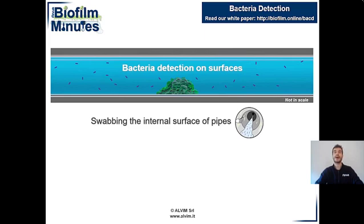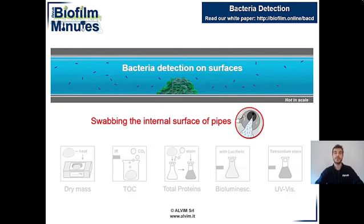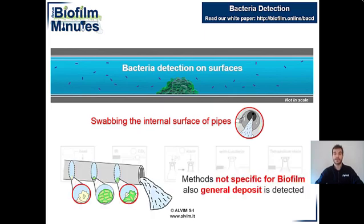Biofilm detection techniques generally require to access the line and swab the internal surface of pipes to collect a sample of biofilm. This sample can be subject to indirect methods of analysis, meaning that a correlation of biofilm presence with, for example, dry mass, total organic carbon, total proteins, and others is made. Of course, it is not comfortable to directly access the line to be informed about biofilm presence. In any case, indirect methods can detect biofilm as well as many other kinds of deposits and thus cannot furnish a representative indication.